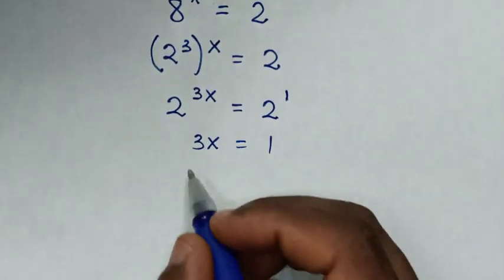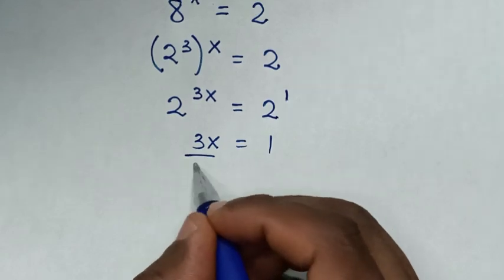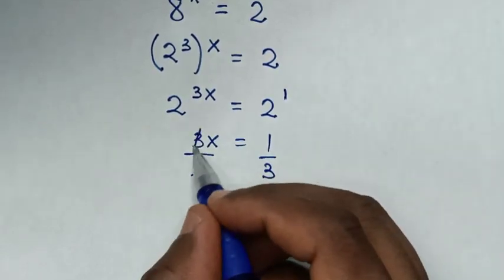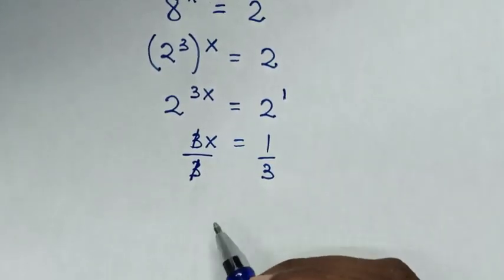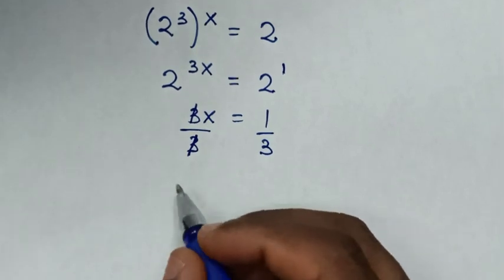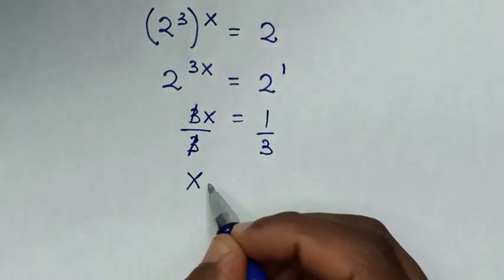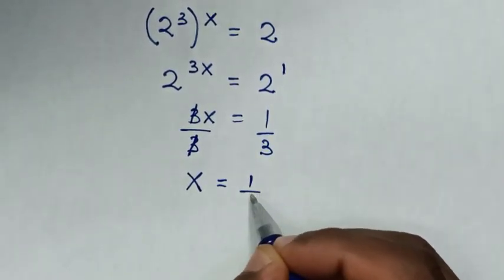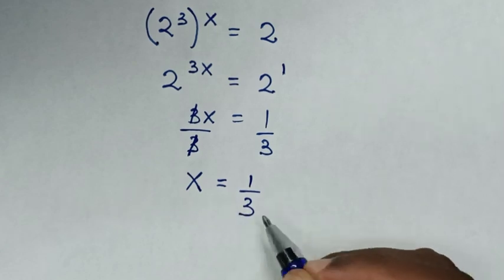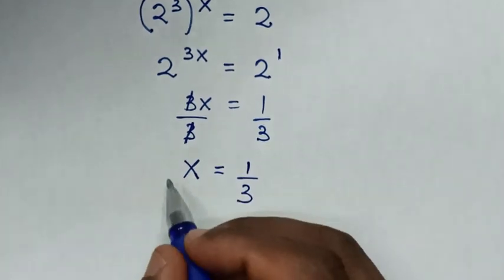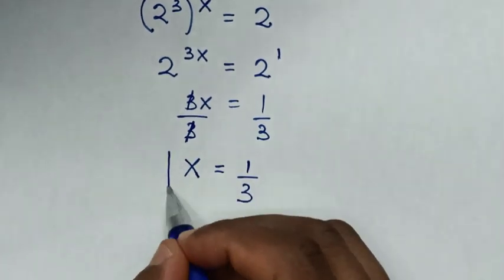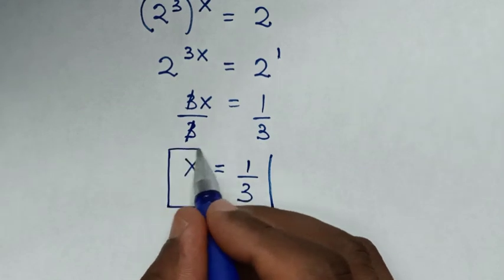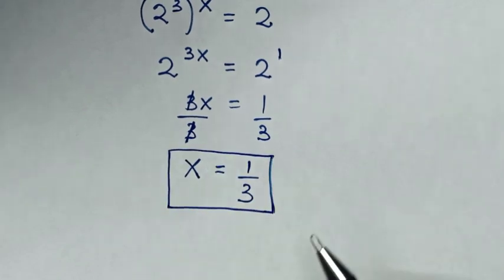Then we divide by 3 on both sides, so this and this will cancel. Then it will be x is equal to 1 over 3. Therefore this is the final answer for the value of x in this problem.